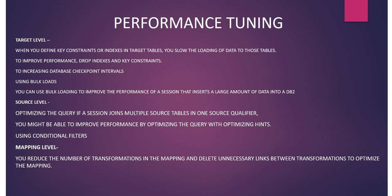At the source level, you can optimize the query. If a session joins multiple source tables in one source qualifier, you can improve performance by optimizing the query with optimization hints and using conditional filters. At the mapping level, you can reduce the number of transformations and delete unnecessary links between transformations to optimize mapping performance.